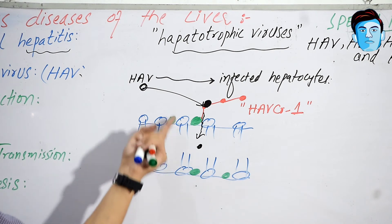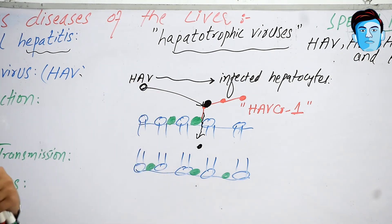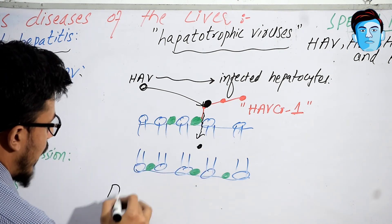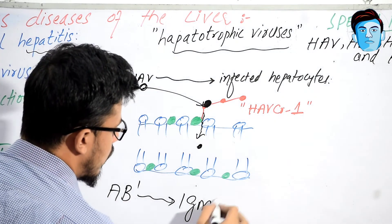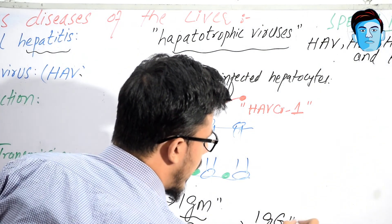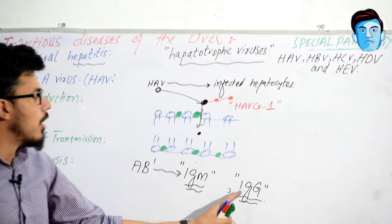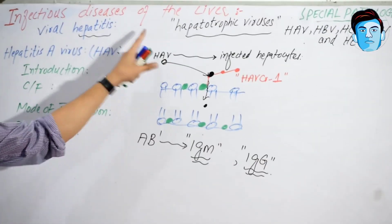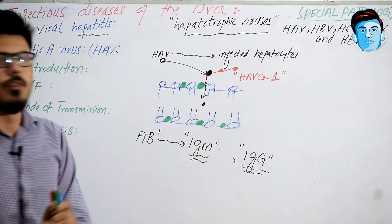When hepatitis A virus causes infection, our body recognizes it as a foreign antigen and begins making antibodies — initially in the form of IgM against the hepatitis A virus. After a few months, the IgM titer starts decreasing and IgG antibodies are produced instead, persisting lifelong. That is the general pathogenesis of hepatitis A virus and how it causes infection.